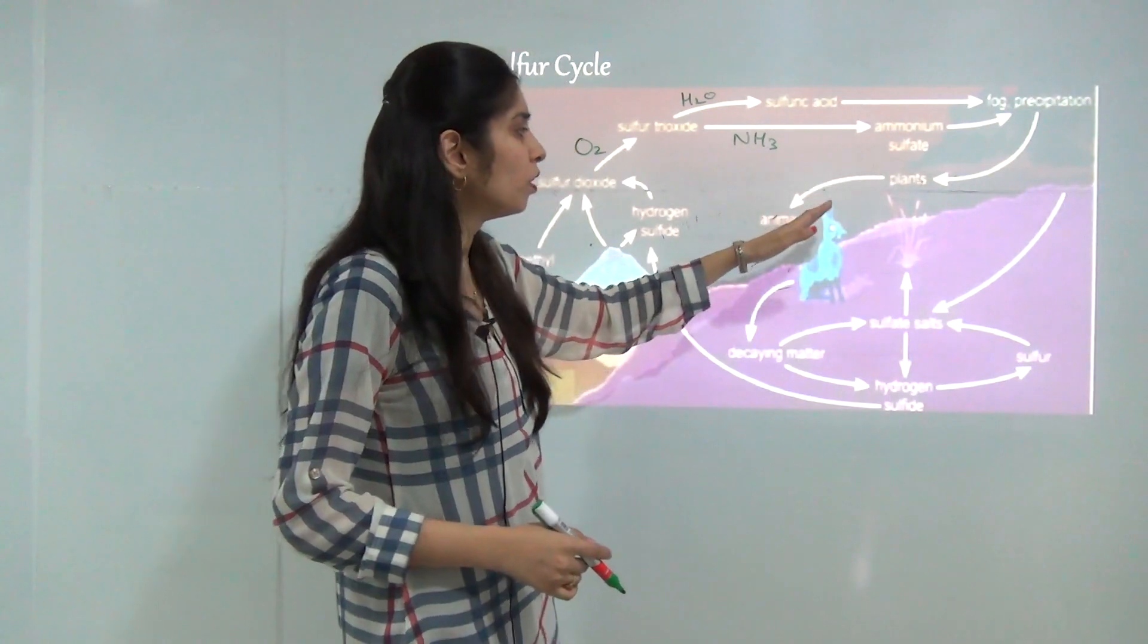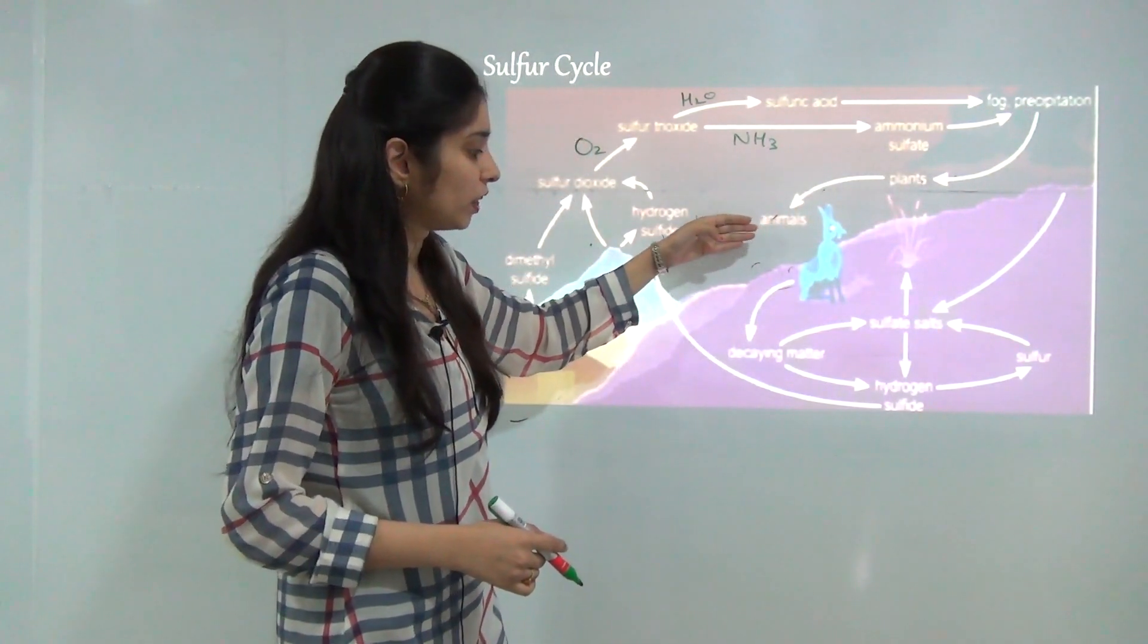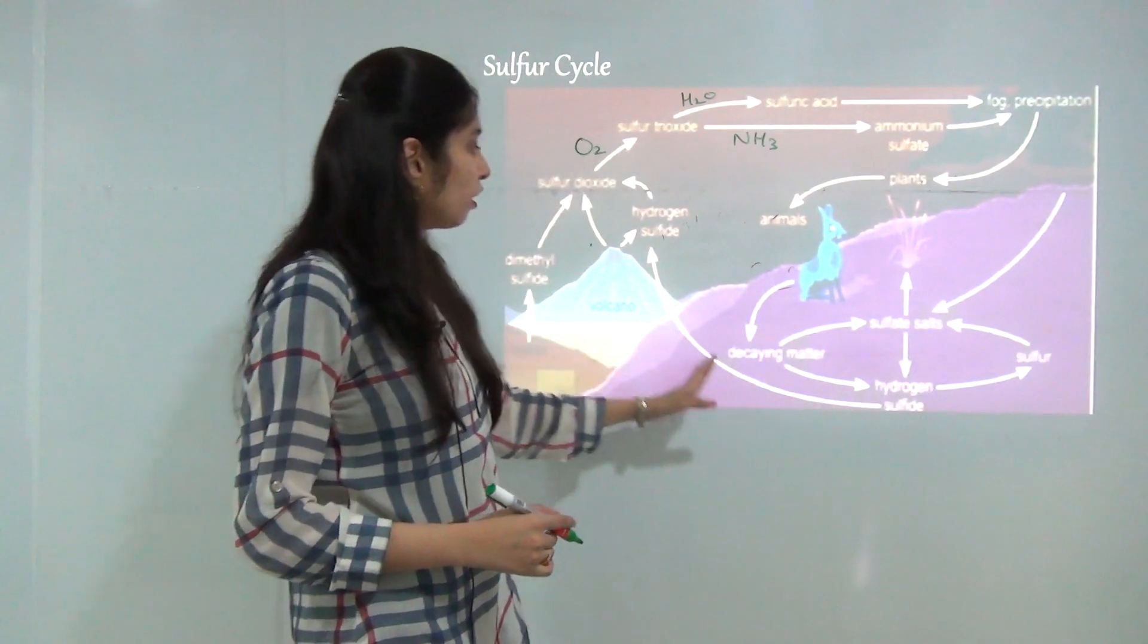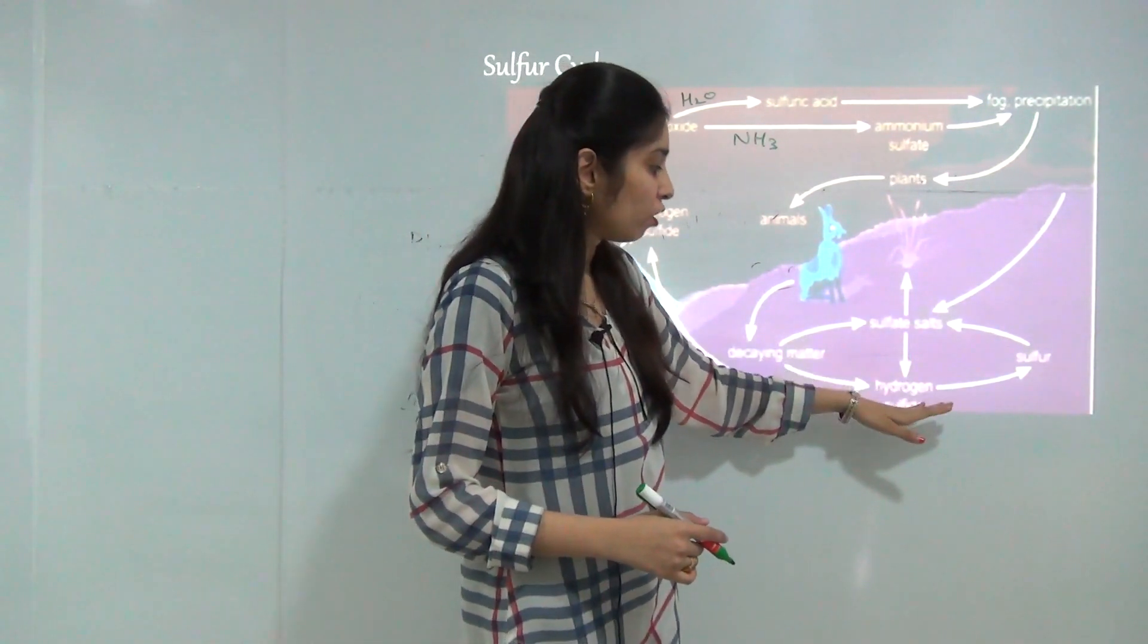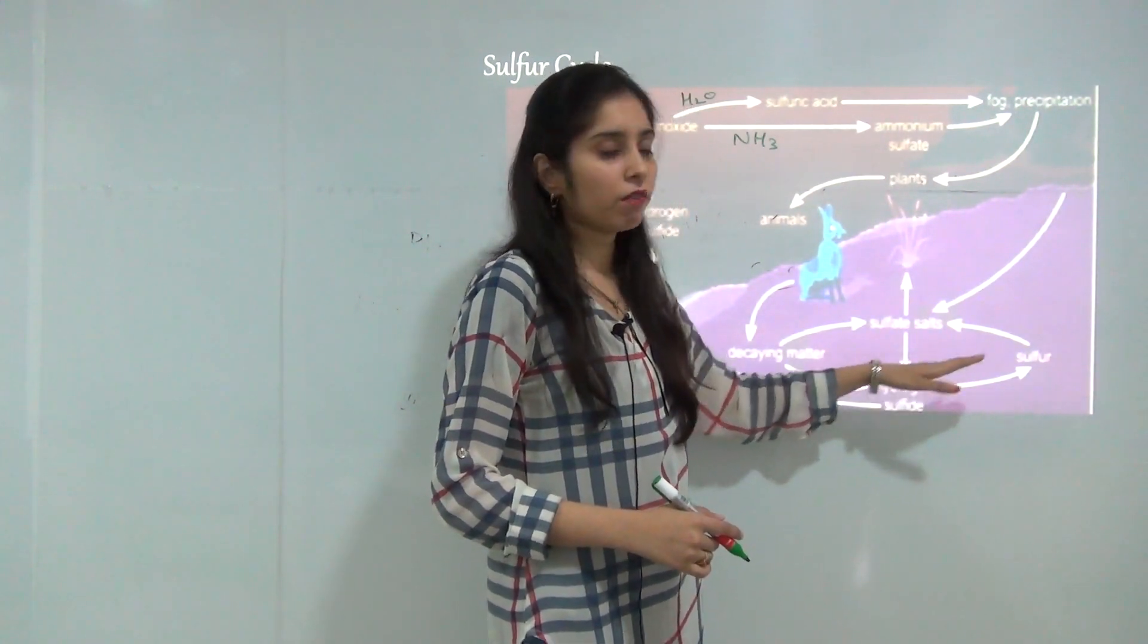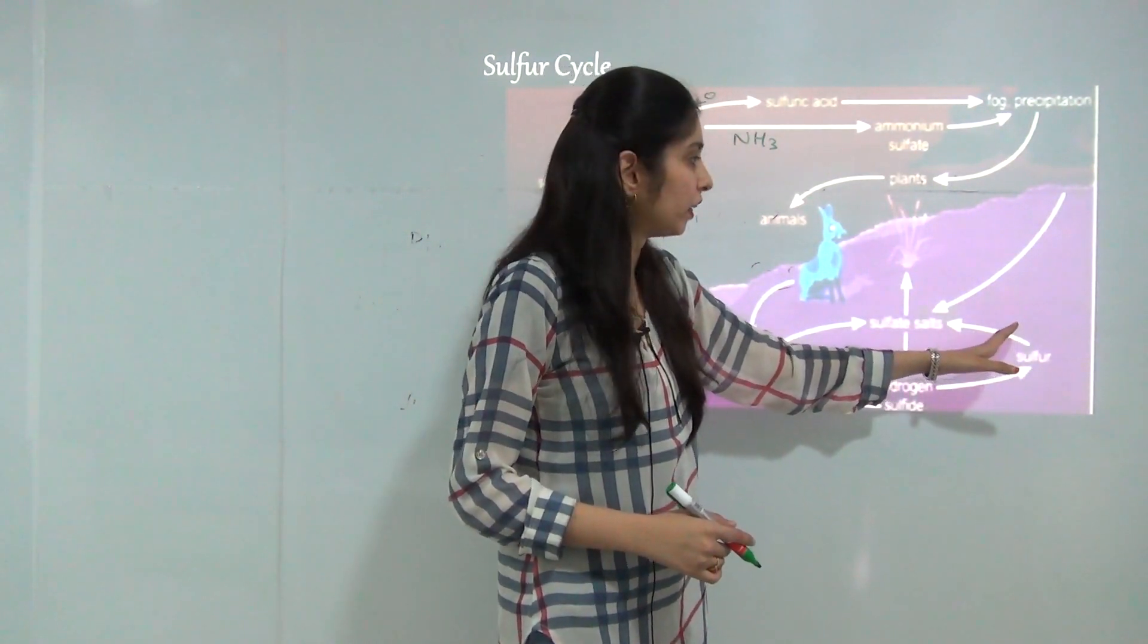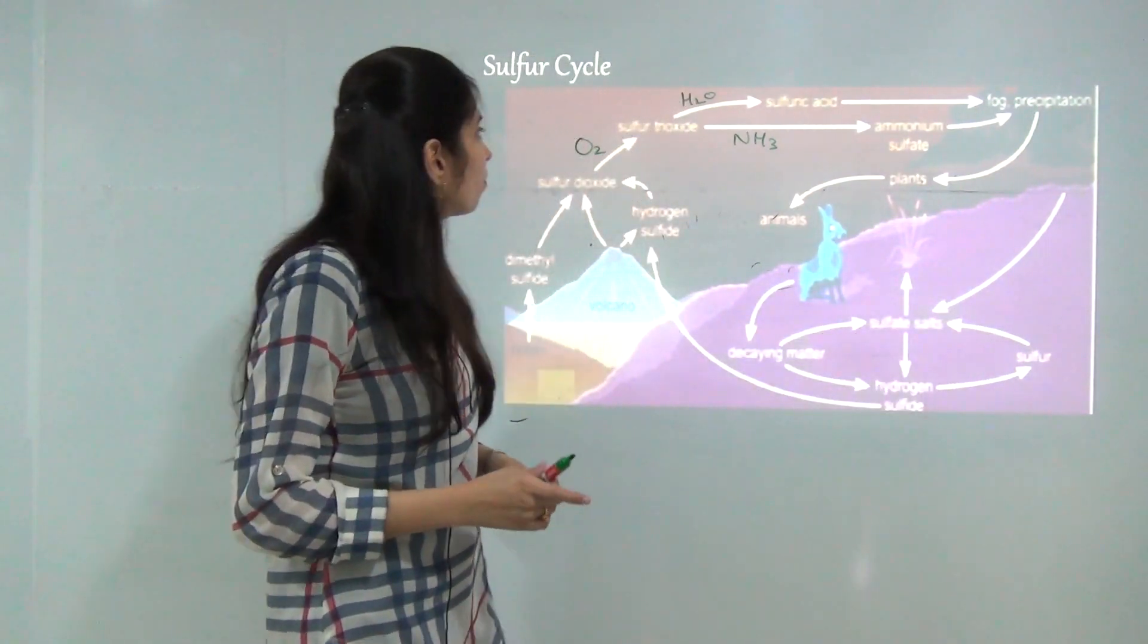Plants consume, animals consume the plants, then by deposition and decaying matter it converted into hydrogen sulfide. This hydrogen sulfide is again transferred to the atmosphere by sulfur containing bacteria. Sometimes due to anaerobic bacteria and chemo bacteria, hydrogen sulfide is converted into sulfur and again sulfur is converted into sulfate ion in the presence of some aerobic bacteria. This whole cycle goes on and this is the example of sulfur cycle.